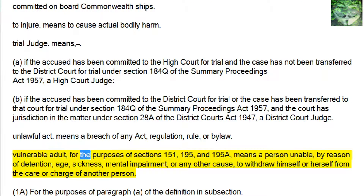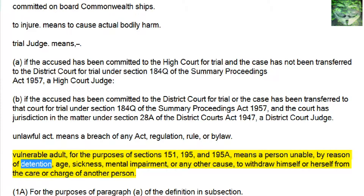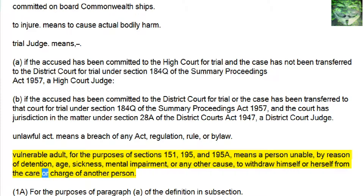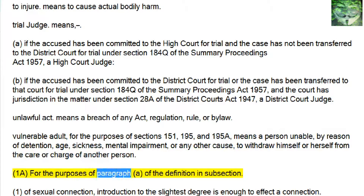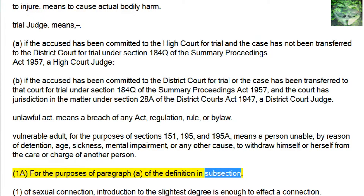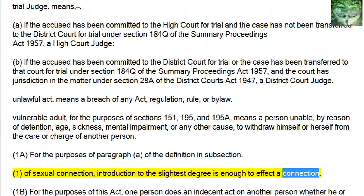Vulnerable Adult — for the purposes of Sections 151, 195, and 195A — means a person unable, by reason of detention, age, sickness, mental impairment, or any other cause, to withdraw himself or herself from the care or charge of another person. Subsection 1A: for the purposes of paragraph a of the definition in subsection 1 of sexual connection, introduction to the slightest degree is enough to effect a connection.